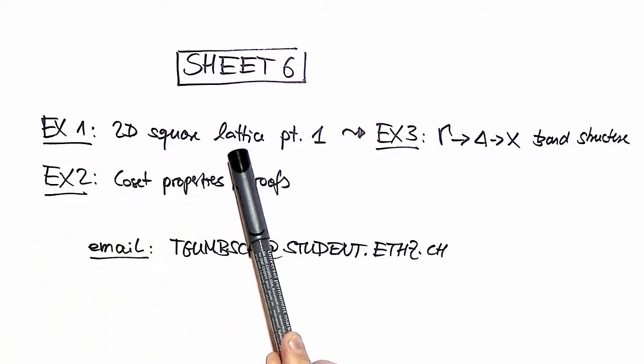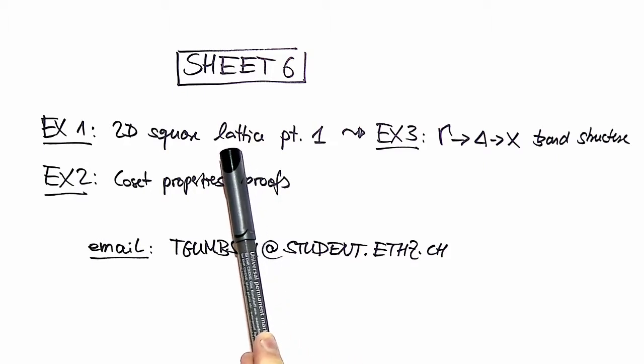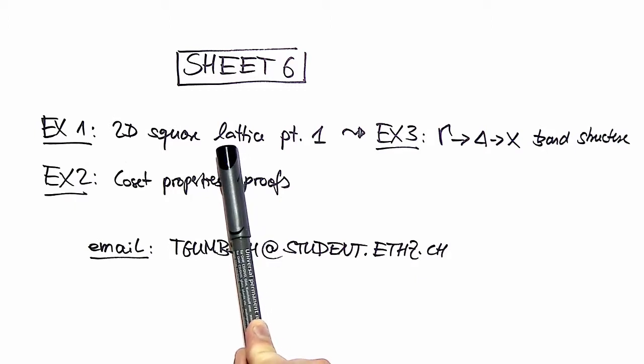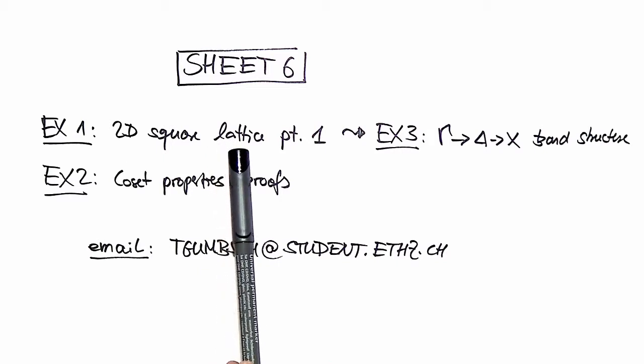In exercise number one we analyze the two-dimensional square lattice, the irreducible representations at the gamma and at the x-point at particular energies and the wave functions, the symmetry of that wave functions which can be assigned to these irreducible representations.